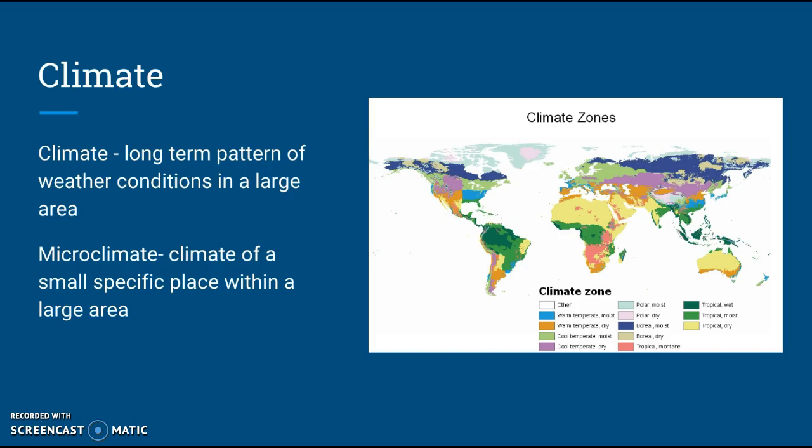Before we start talking about biomes, it's important to talk about climate. Climate is going to be long-term weather conditions in a large, specific area. As you can see on the map to the right, the different colors are representative of different climate zones. If you look, you can kind of see Indiana is towards the warm-temperate or cold-temperate area, so that's the whole area's climate.